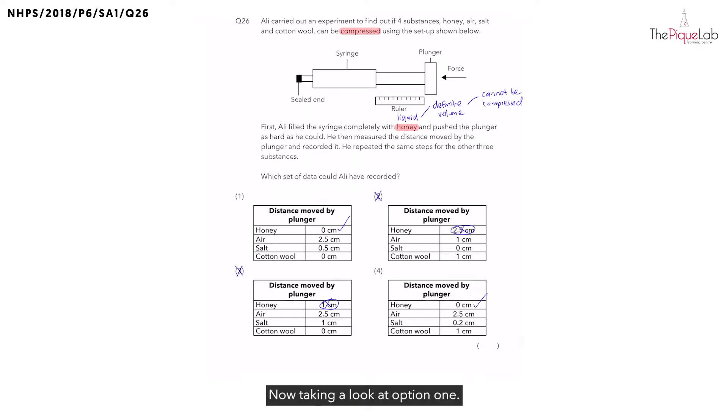Now, taking a look at option 1, now let's take a look at air next. Now, for air, what is the state of matter? We know that air is in the gaseous state. And remember, can gases be compressed? Yes, right? We know that gases, they do not have a definite volume, which means they can be compressed.